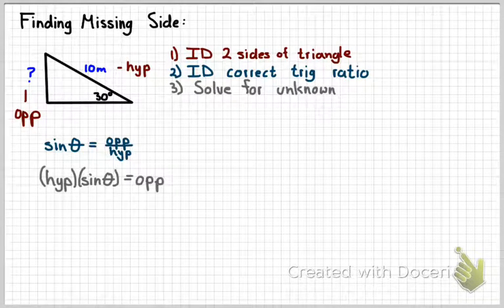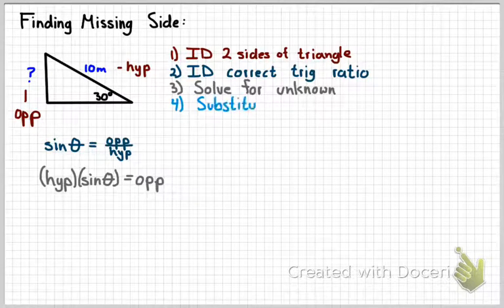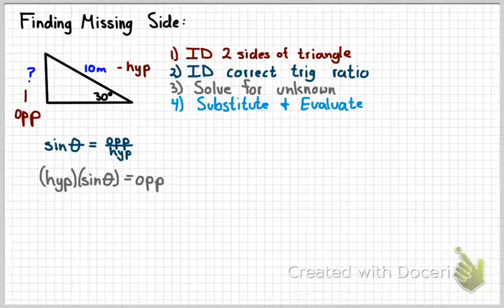So if you multiply both sides by the hypotenuse, now the opposite side is by itself in that equation. Substitute your numbers, and then evaluate.